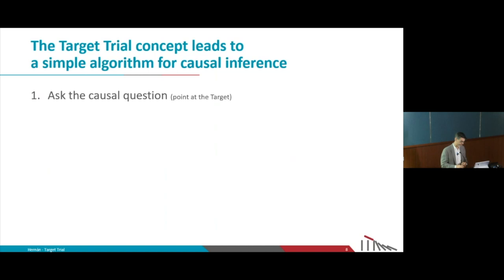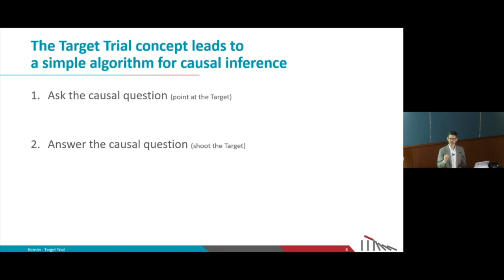This is probably the most important point: causal inference is about asking questions and answering questions, but we cannot answer a question we haven't asked first. That seems obvious, but a lot of the problems we see in observational analysis result from not thinking of these as two different steps.